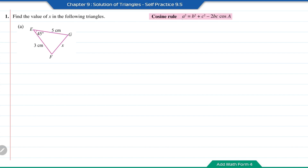In the cosine rule, the small letter a is the length of one side in the triangle, whereas the capital A is the angle which is opposite to side a. So in diagram A, x is opposite the angle 45 degrees. Therefore x is the a in the formula, whereas 45 degrees is the capital A. The 3 cm and 5 cm will be b and c.